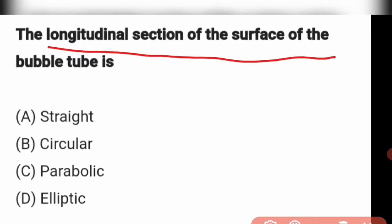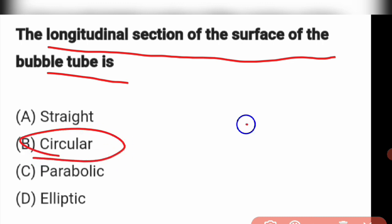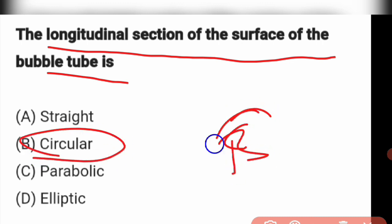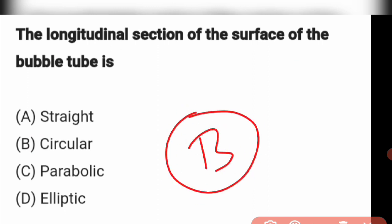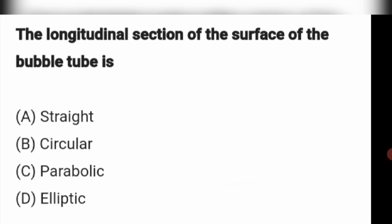Next question: The longitudinal section of the surface of the bubble tube is what? The longitudinal section of the surface of the bubble tube is circular. Option B: circular.